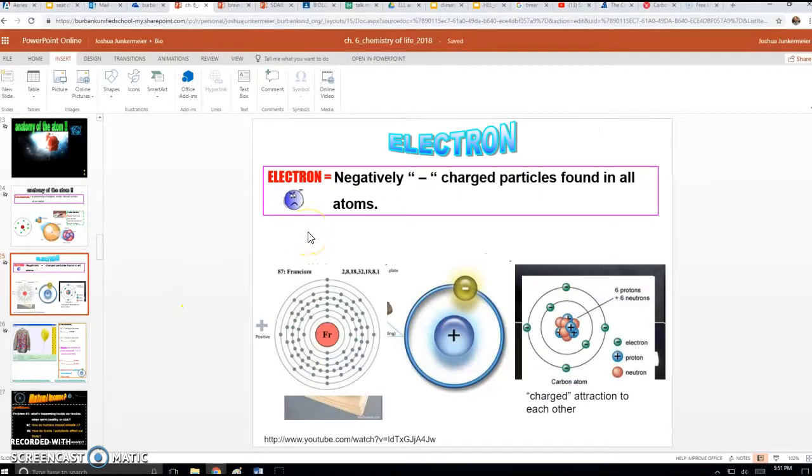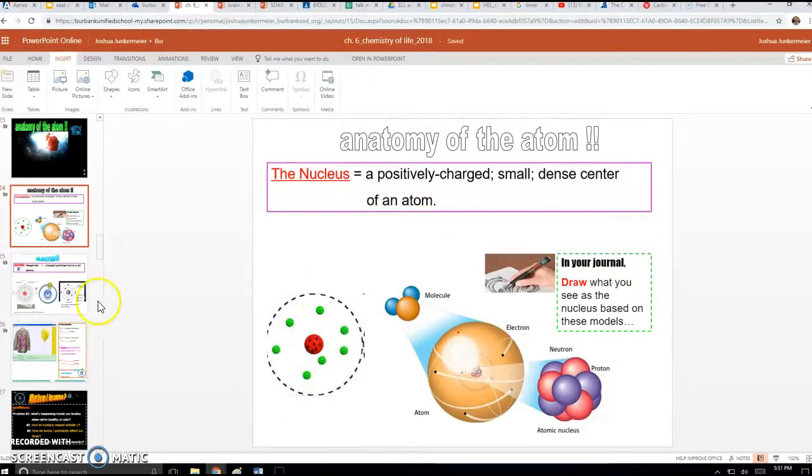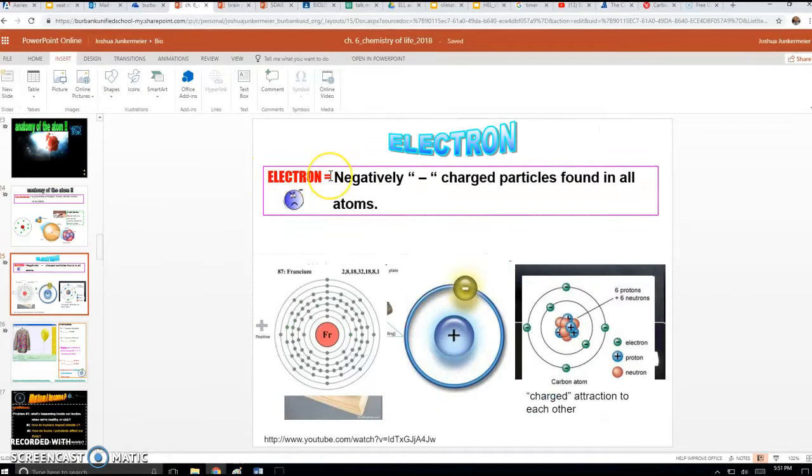Slide 22. Here's the next part of an atom. It's called an electron. So we just learned that the nucleus is positively charged. Now there's electrons that are also making up atoms. And they are negatively charged particles found in all atoms. And you can see right here, it's a negative sign. The electrons are found on the outside of the atom. You have the center nucleus that's positively charged. And you have the electrons on the outside that are negatively charged.